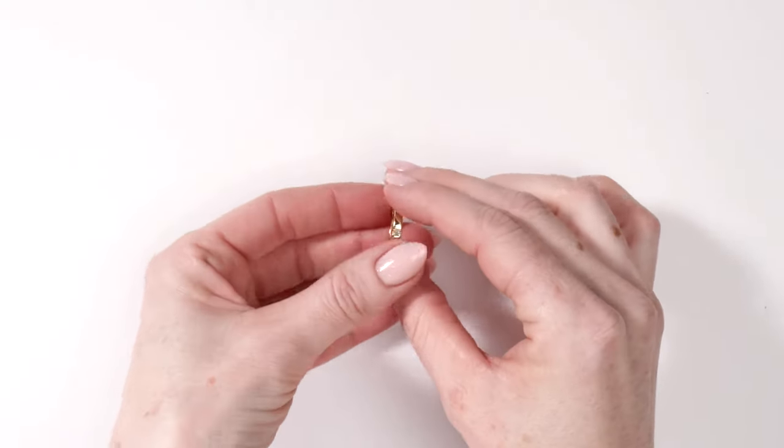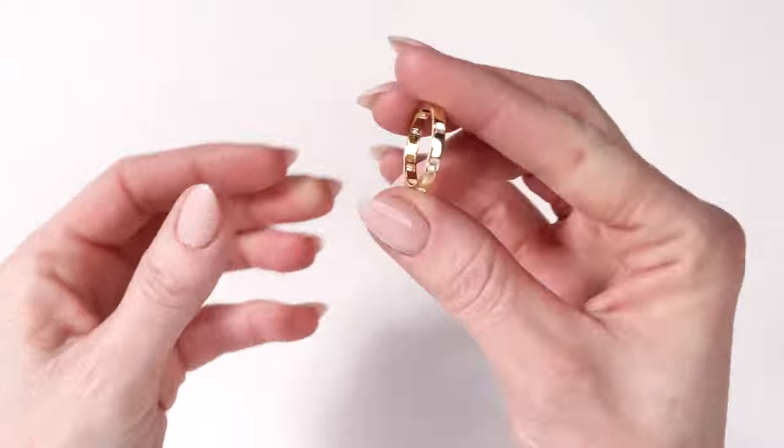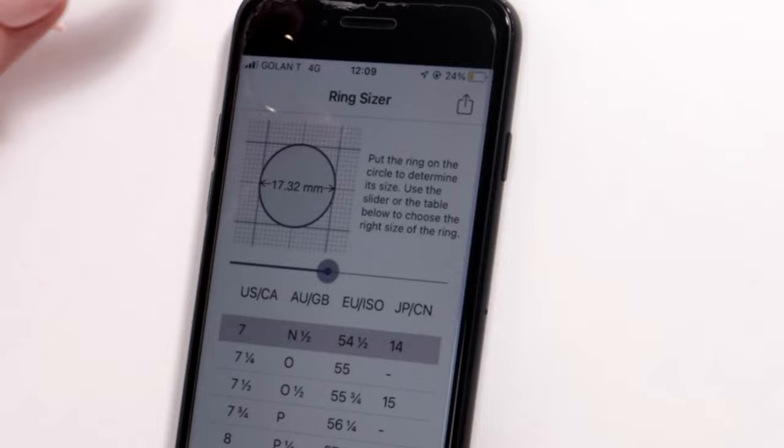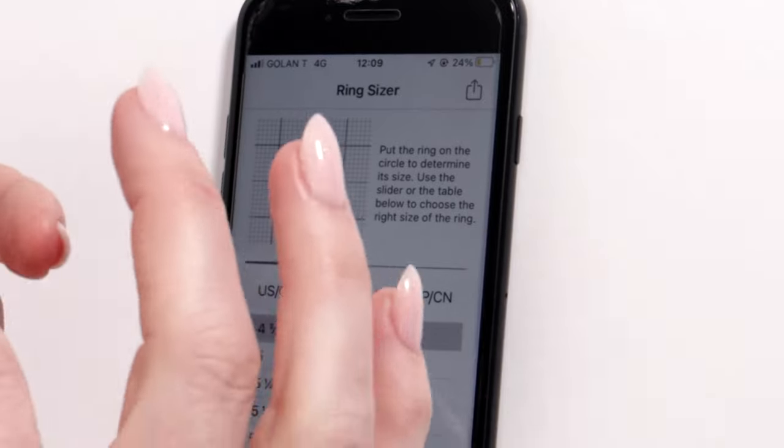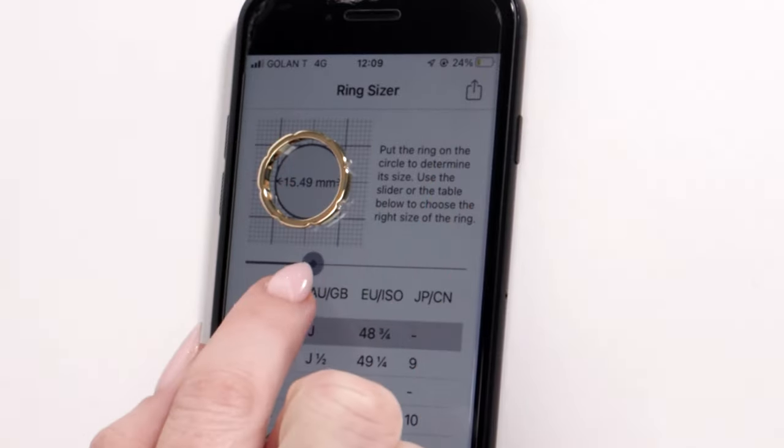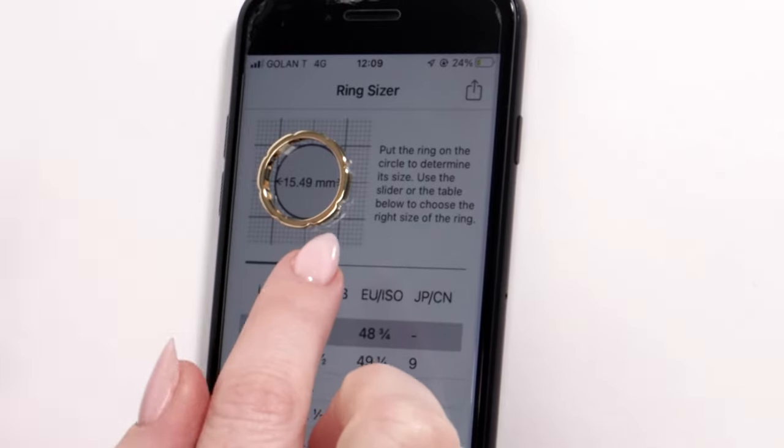The last way would be to measure a ring that you already have. I can measure this ring simply by using the ring sizer app. Here we have the ring sizer app. Place your ring on the circle over here and then we're going to adjust the circle from the app.